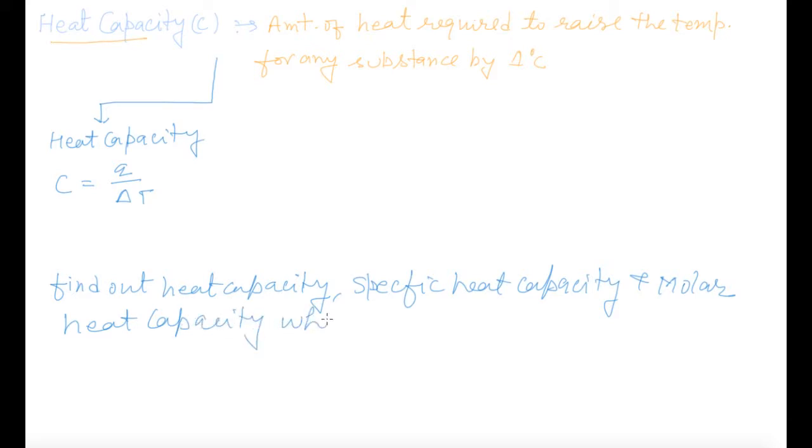When three grams of aluminum is heated from 298 Kelvin to 300 Kelvin, it releases 5.4 joules of heat. I will explain this question in three terms.